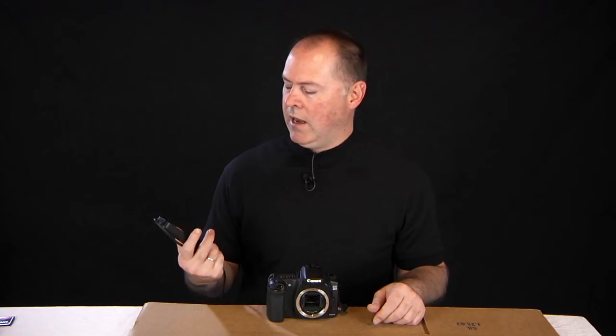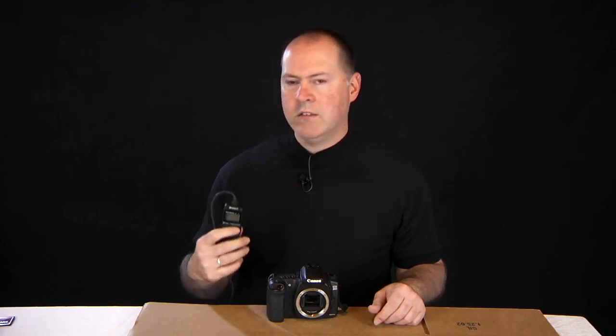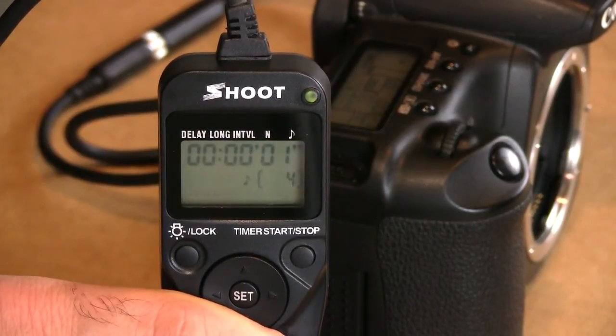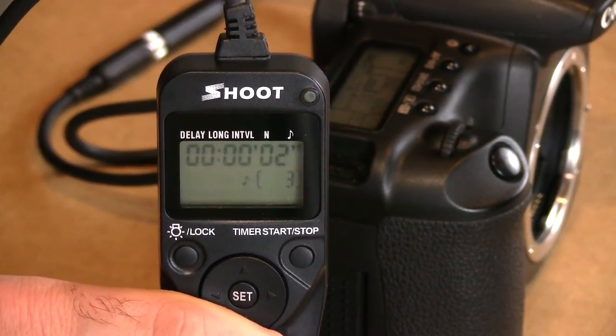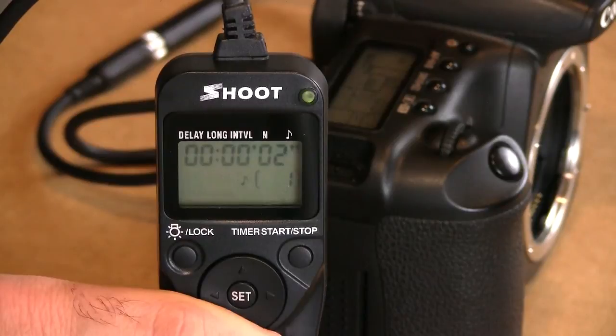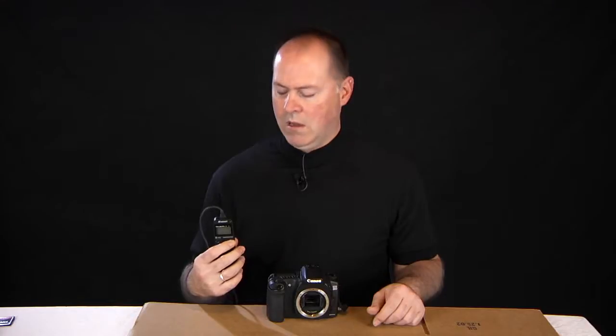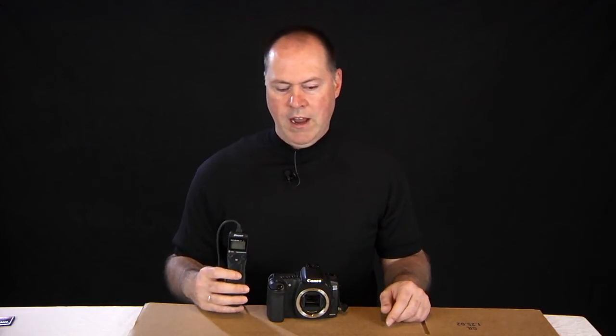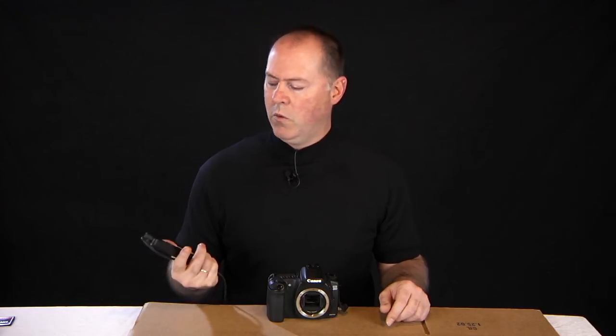And it works beautifully. I now have the remote timer hooked up to the Canon 20D body. Same setup as before. 5 images every 2 seconds. Let's go ahead and give this a try. And as you can see, it works beautifully. Let's go ahead and try out the manual shutter release with the remote timer. And as you can see, it works perfectly.